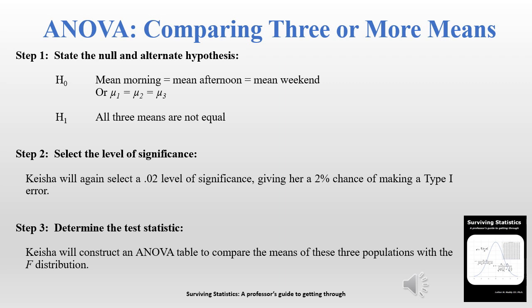Keisha is now ready to go through the five-step hypothesis testing procedure with three means. Step one: the null hypothesis is that all three means are equal — there is no difference in any of the means. The alternate hypothesis is that they are not equal. Step two: she will select the 0.02 level of significance, giving her a 2% chance of making a Type I error. Step three: she's going to construct an ANOVA table using the F distribution.